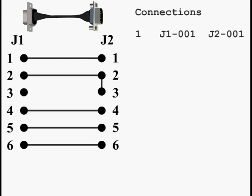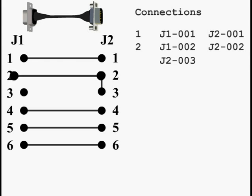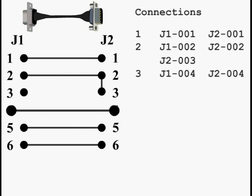Net 1 is a wire that connects from J1 pin 1 to J2 pin 1. Net 2 goes from J1 pin 2 to J2 pin 2 with a jumper to J2 pin 3. Net 3 is J1 pin 4 to J2 pin 4, and so on.